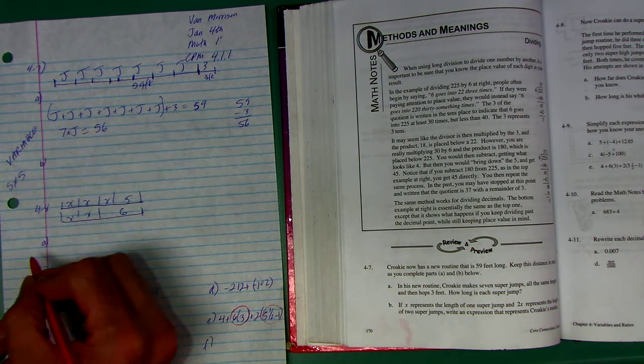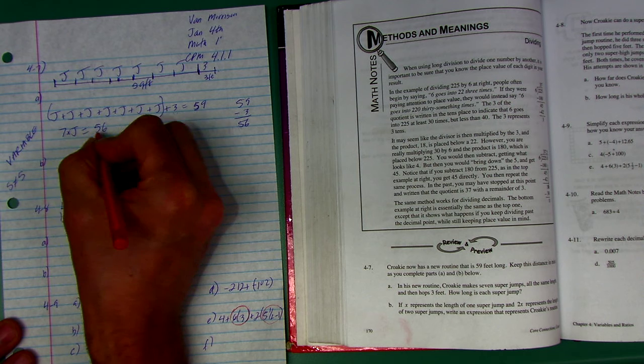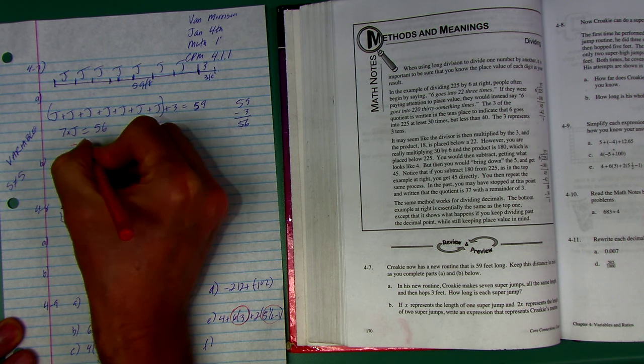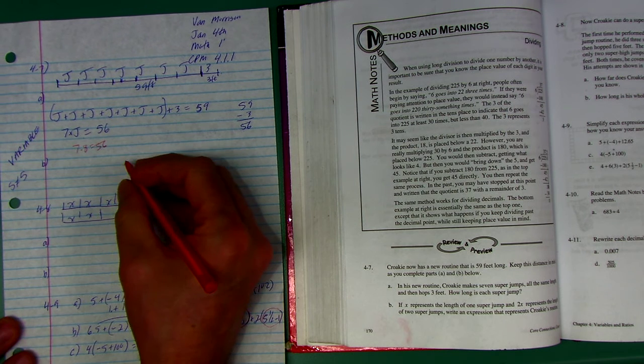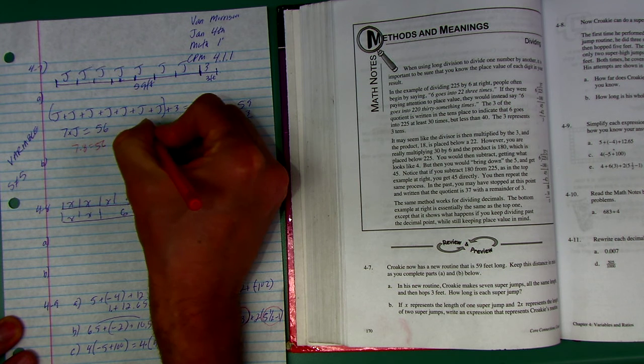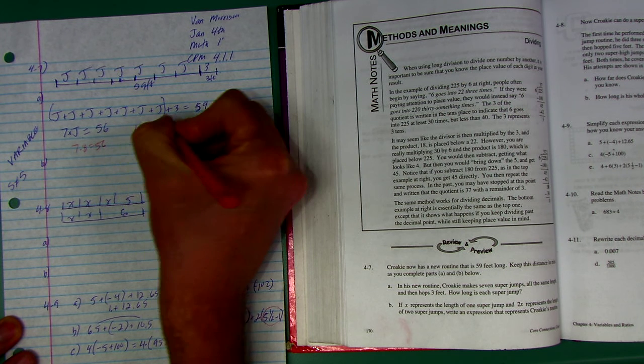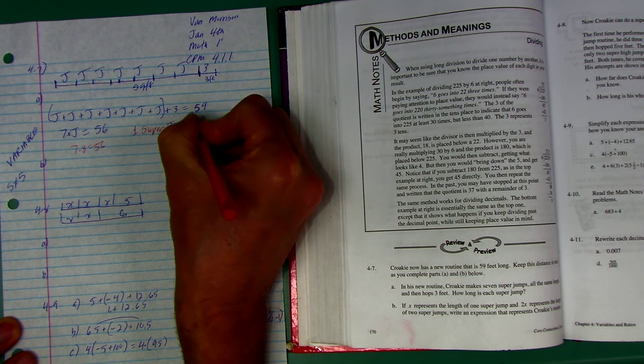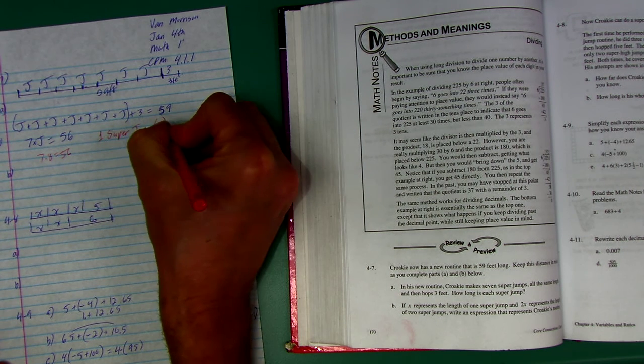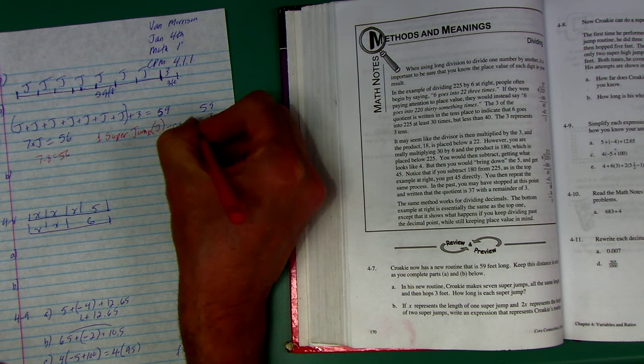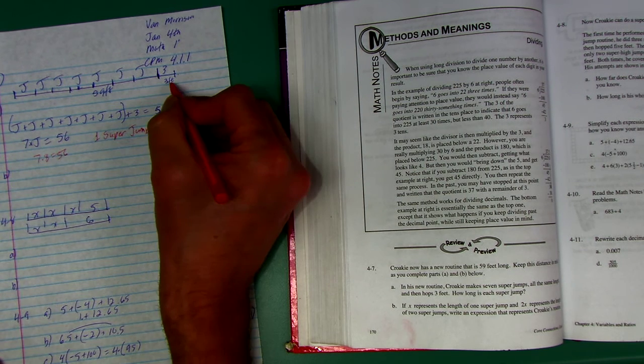Seven times what is 56? Seven times eight equals 56. You been practicing those facts? So a super jump, one super jump, J equals eight feet. Let's just double check: seven times eight is 56 plus that last three, 59. Cool.